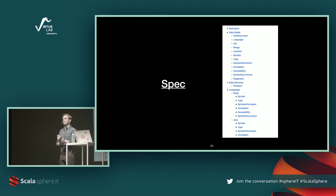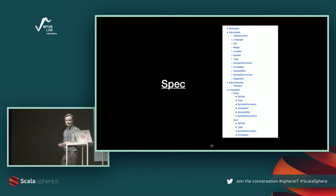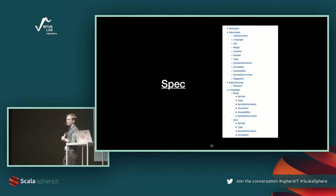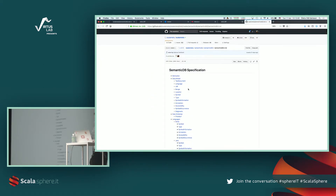Those are the three main data structures in SemanticDB. About half the schema covers the cases of the Scala type system. What's really interesting is that it's just raw data, and it can be easy to produce incorrect data. So we have a spec that is 11,000 words and comprehensively covers most language features in Scala and also Java for signatures. It's not great if you just want to get started, but once you have started it's a reference point to look up how specific constructs should be represented.